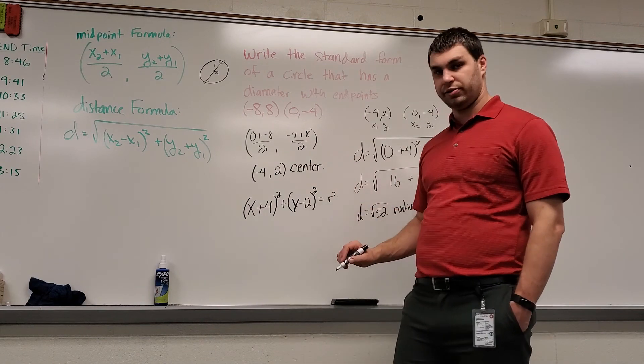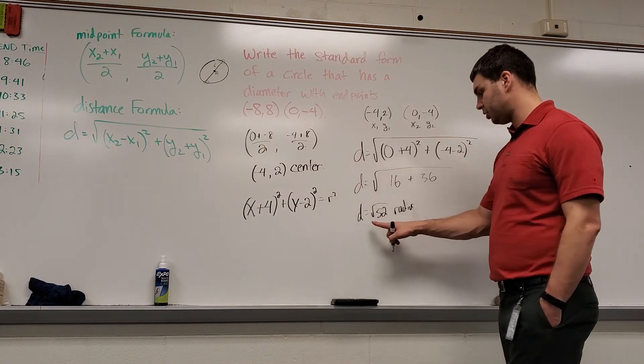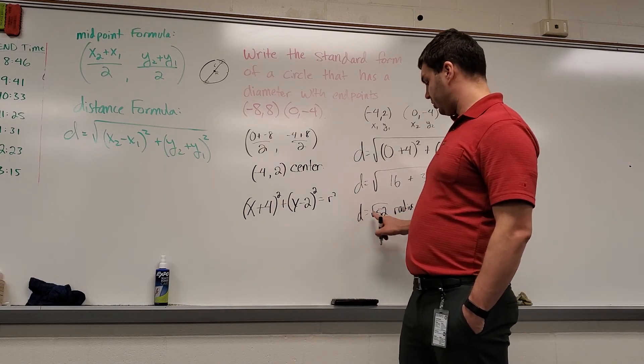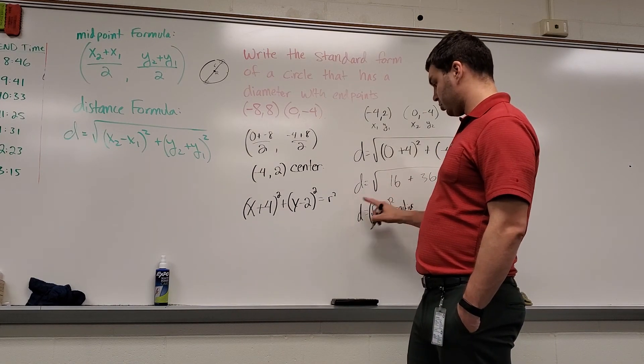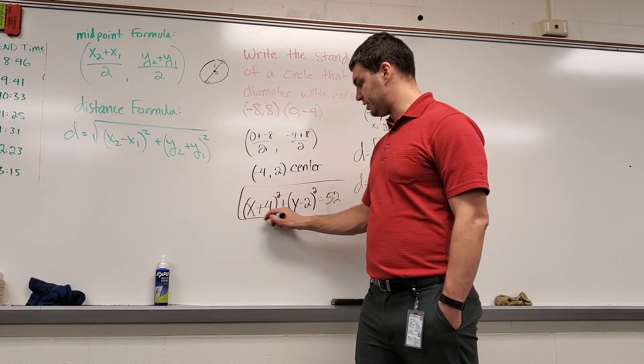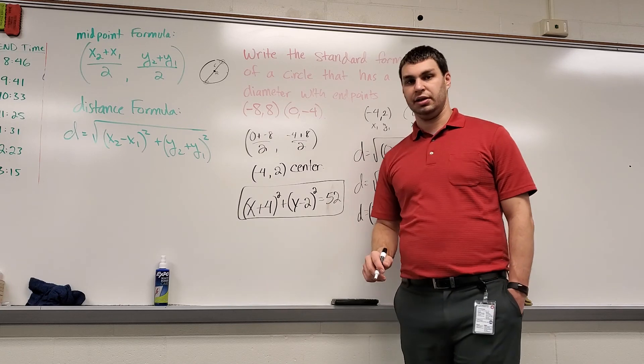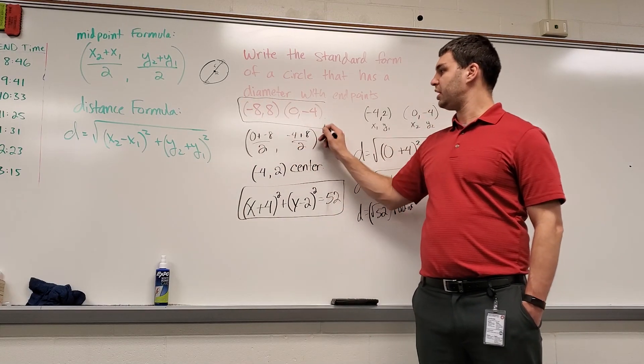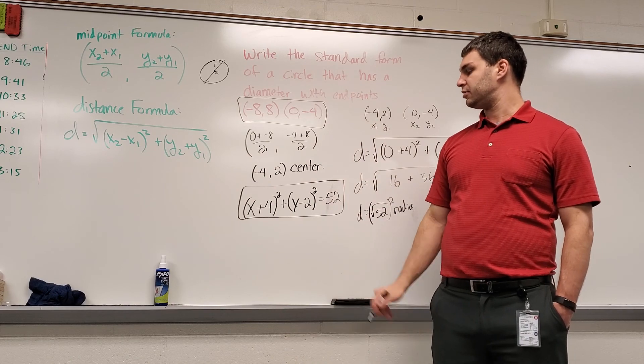And this needs to be r squared. Well, remember from before, r, the radius, is the square root of 52. So the square root of 52 squared is just going to be 52 without a square root. Now this is the standard form of that circle. It has endpoints of a diameter, negative 8, 8, and 0, negative 4.